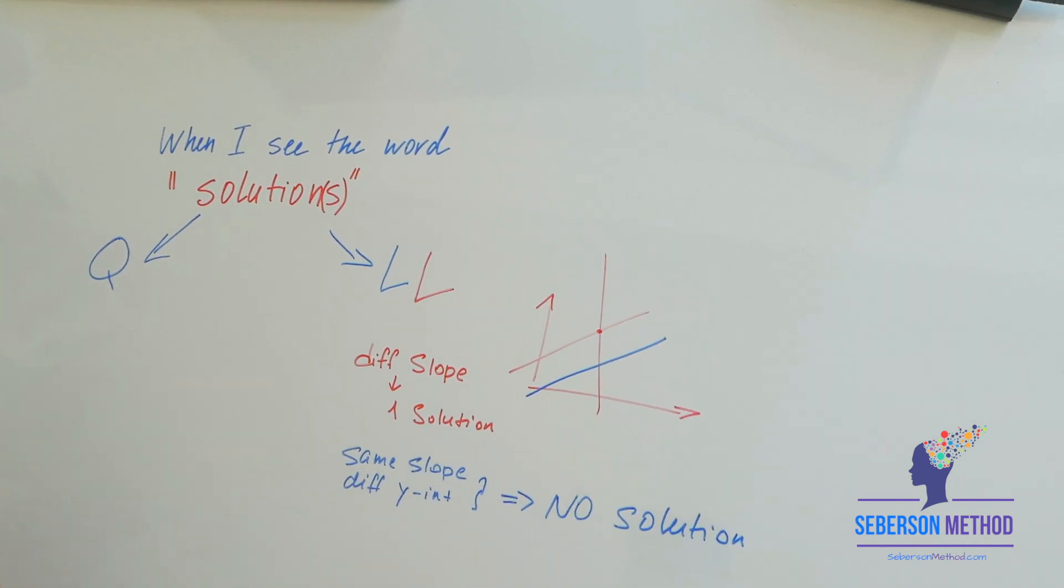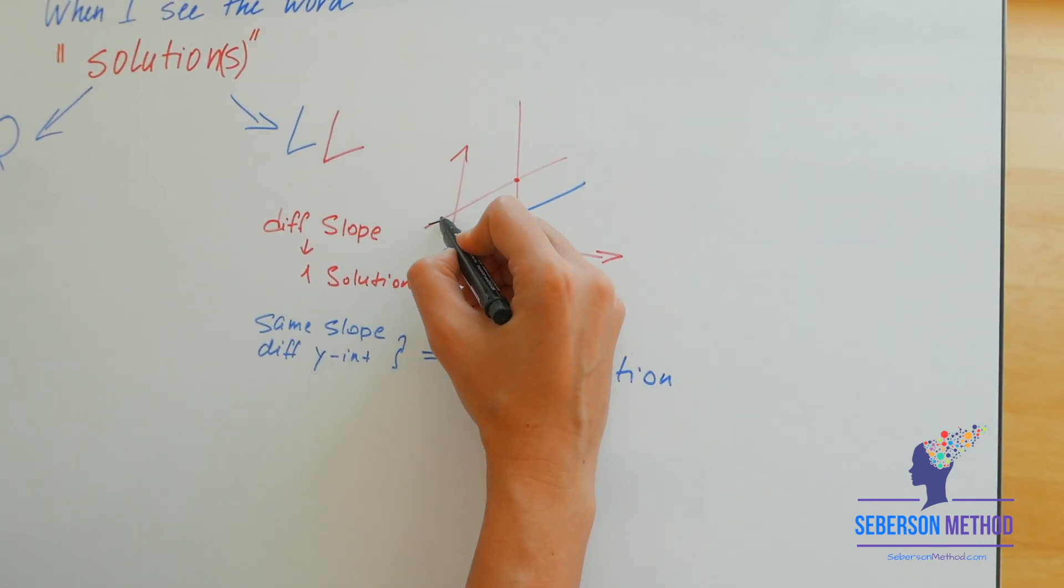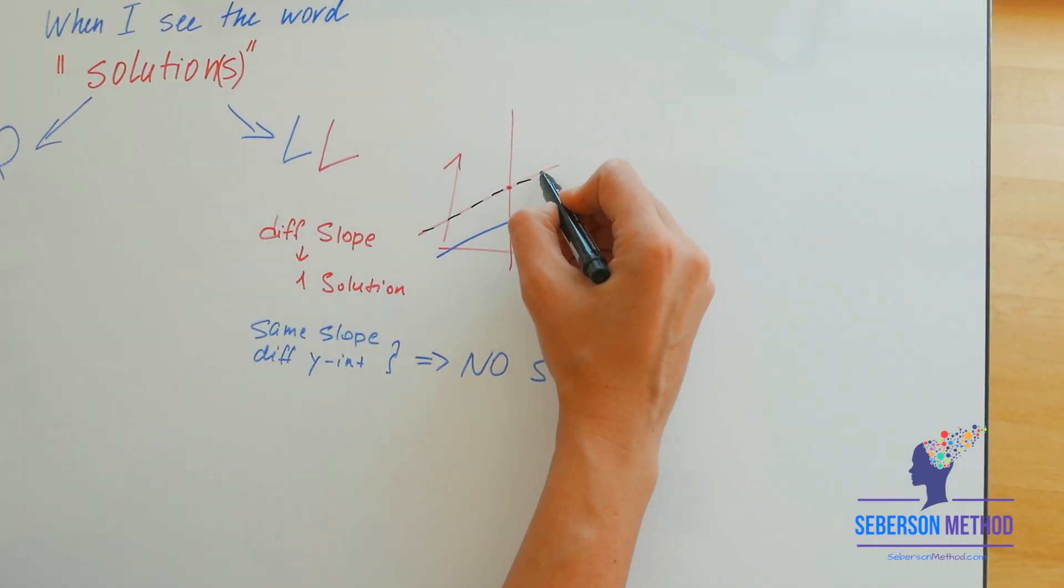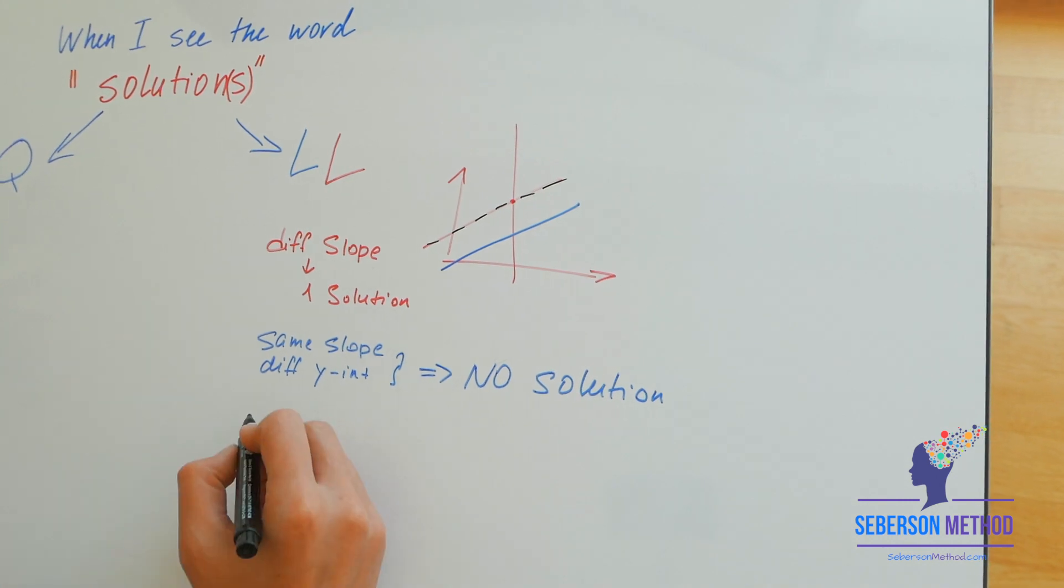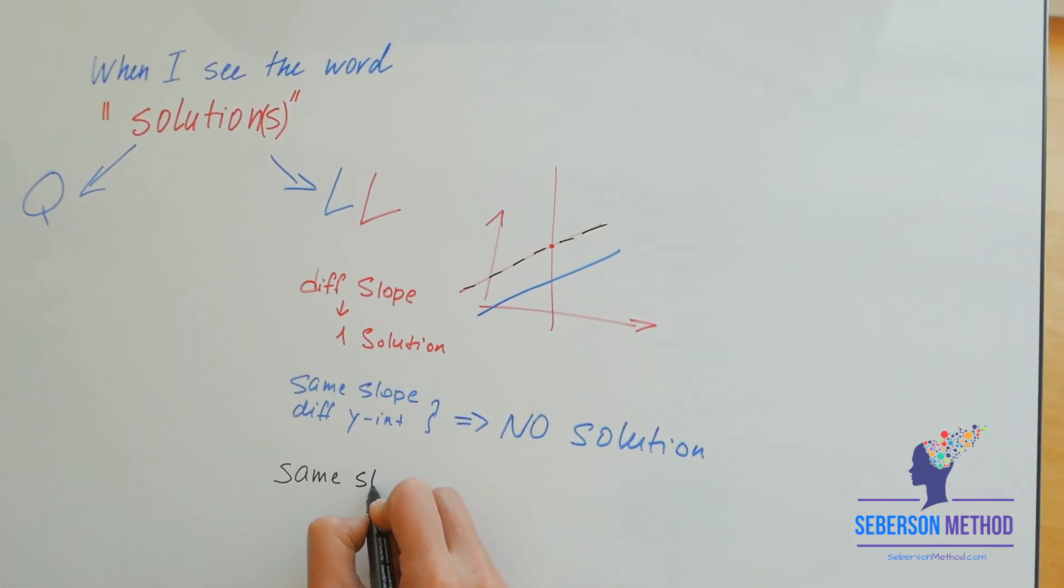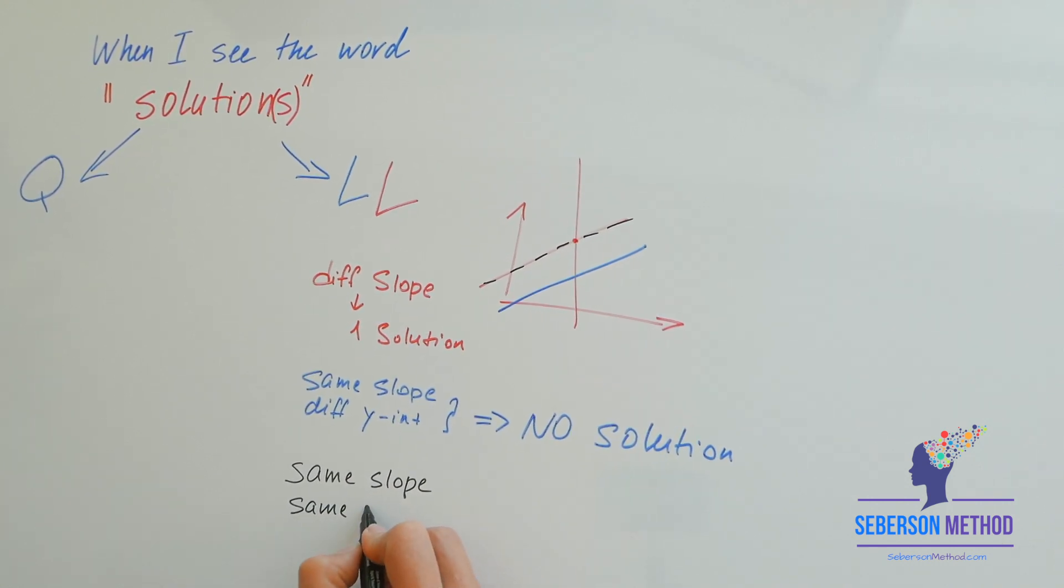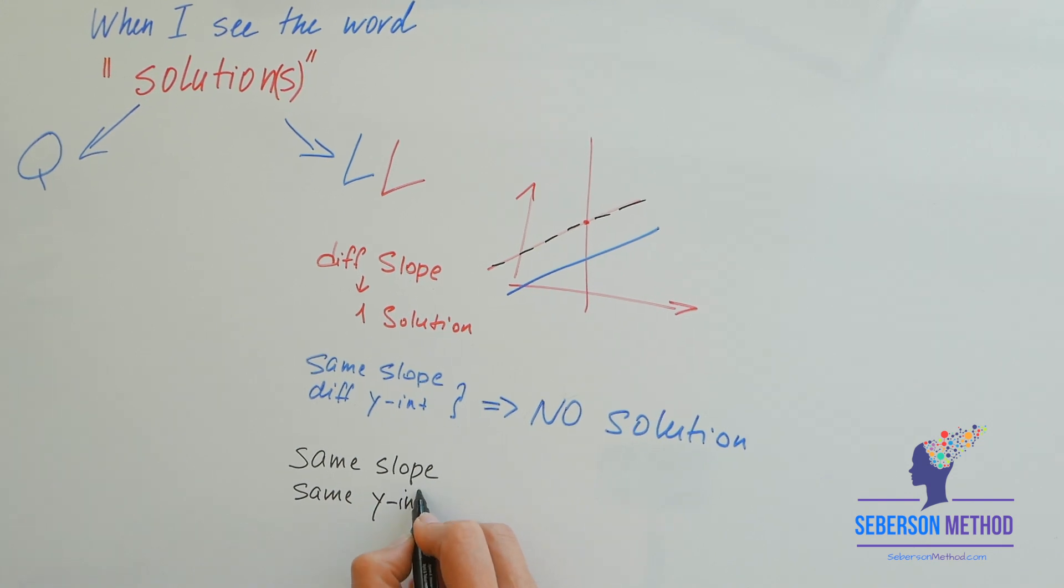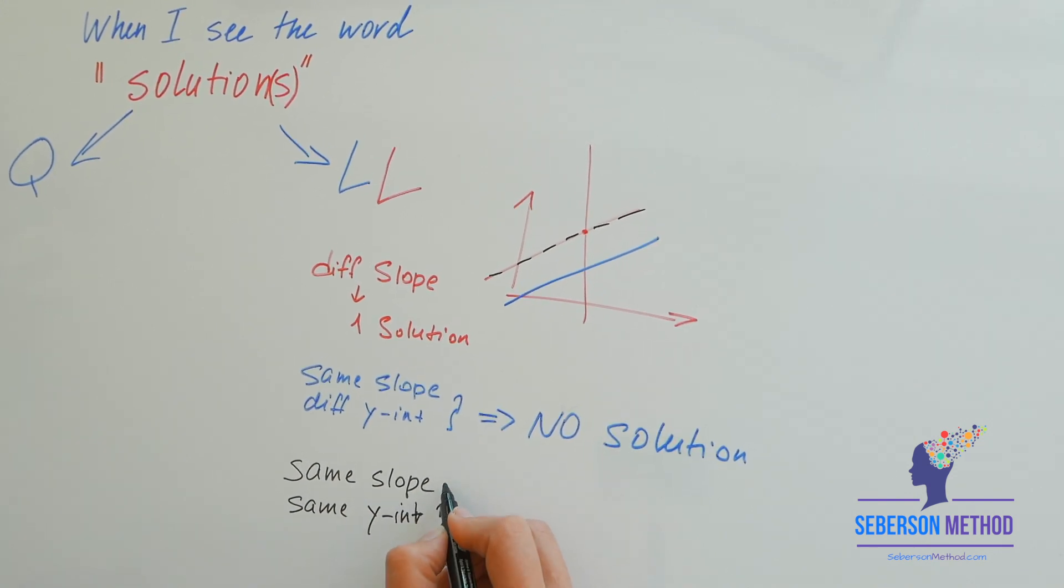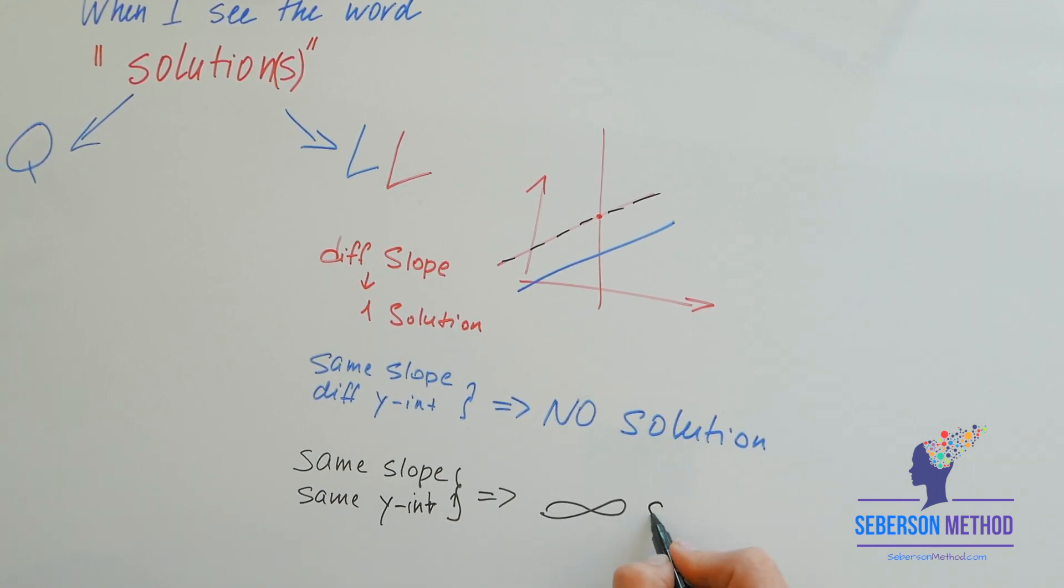And when two lines have the same slope and the same y-intercept, they're going to be kind of on top of each other. Same slope, same y-intercept. This is going to yield infinitely many solutions.